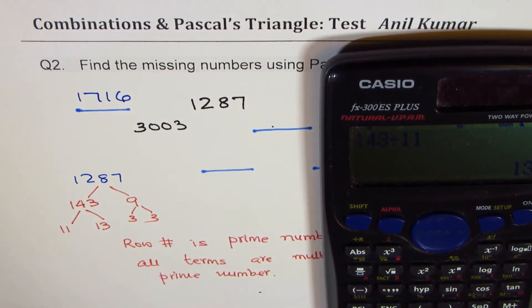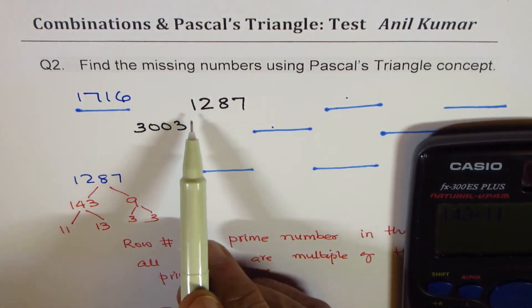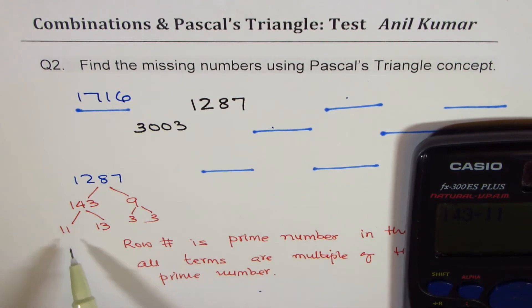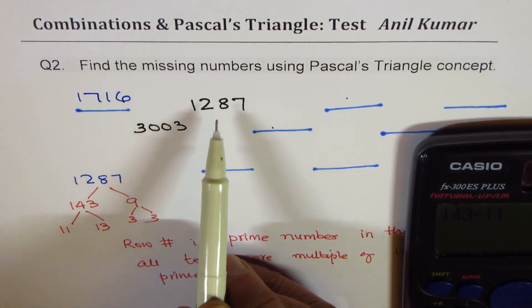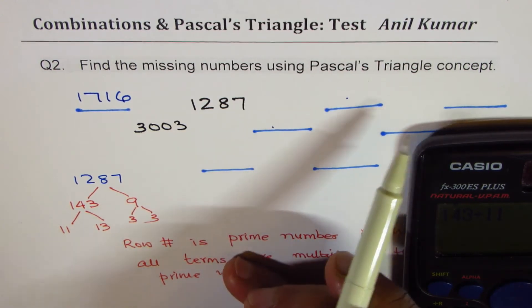So we can look for possibility of numbers with 11 and 13. So if I could relate 1287 with the combination of 11 or 13 I'll get an idea and then I can fill the rest.